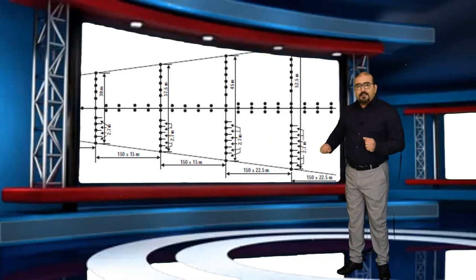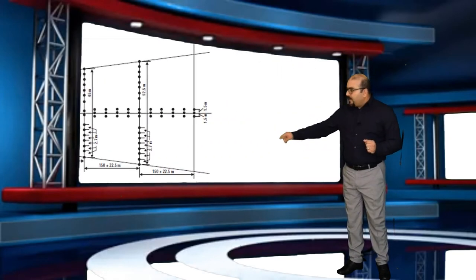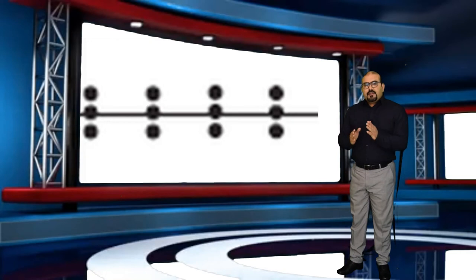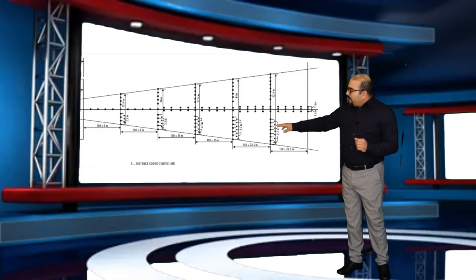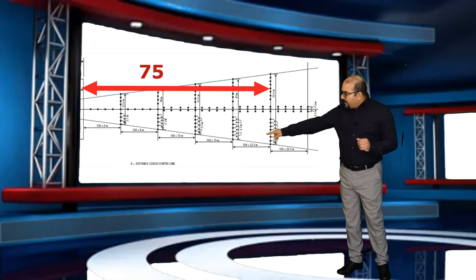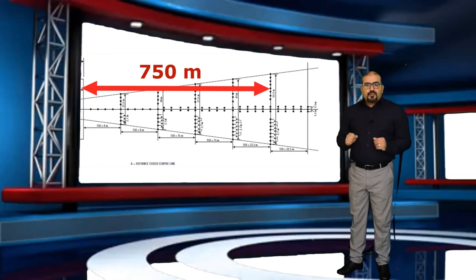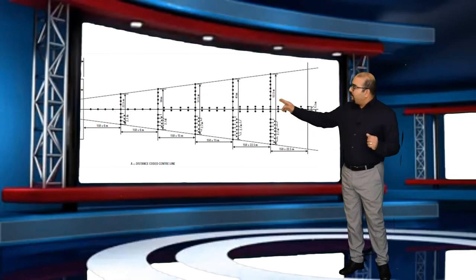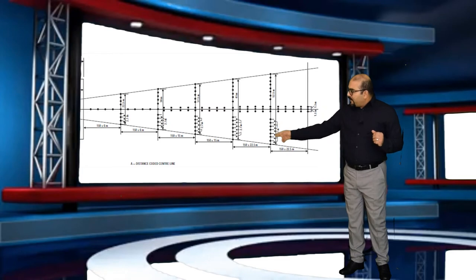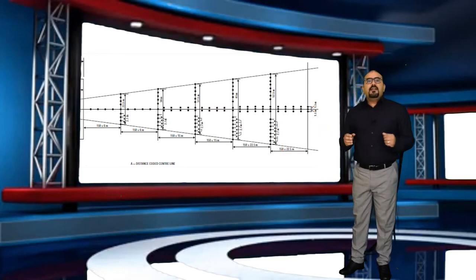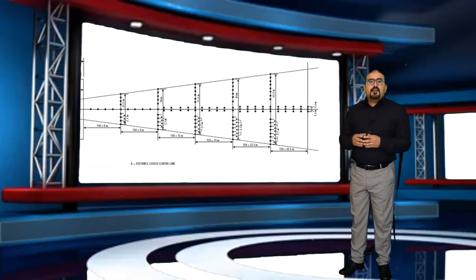The last 300 meters, the centerline will be formed by three lights, with the same spacing of 1.5 meters between each light. The last crossbar will be at 750 meters from the threshold. It's worth noting that the acceptable tolerance for the centerline angle with respect to the runway centerline should not exceed 15 minutes.